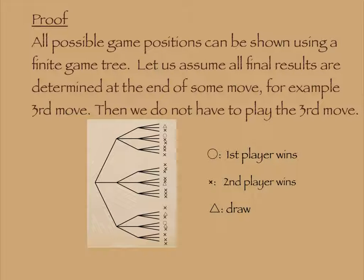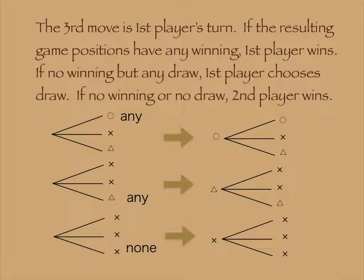Then we do not have to play the third move actually. The third move is first player's turn. If the resulting game positions have any winning, first player wins. If no winning but any draw, first player chooses draw. If no winning or no draw, second player wins.